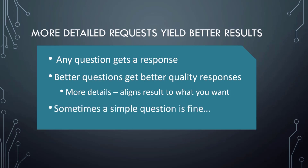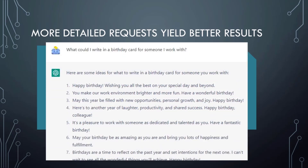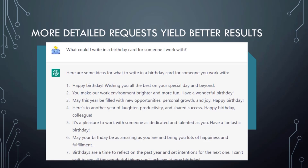In many cases, one clear sentence asking exactly what you want is fine. Asking what could I write in a birthday card for someone I work with gives ten choices — pick one, you're done. However, in cases where you really care about what you're creating, you'll want to refine the prompt. You can give it instructions about tone such as cheerful, direct, or motivational, and audience — it can write for third graders, college design majors, marketing executives, or English language learners.